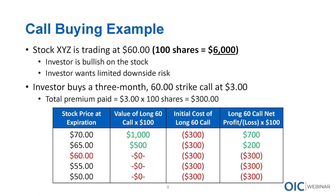Now let's look on the upside. Say that 60 strike call you paid $3 for - at expiration the stock is trading $65, which is $5 above the strike. The value of the call is $500. Did you make $500? No - the value is $500 but you paid $300 for it, so the money that you made was $200. At $70 at expiration, the value of that call is $10 - 10 times the 100 multiplier gives us $1,000. The initial cost was $300, so your profit is $700.